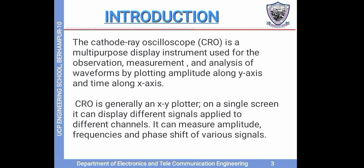Introduction. The cathode ray oscilloscope, i.e. CRO, is a multi-purpose display instrument used for the observation, measurement and analysis of waveforms by plotting amplitude along the y-axis and time along the x-axis. CRO is generally an x-y plotter. On a single screen, it can display different signals applied to different channels. It can measure amplitude, frequencies, and phase shift of various signals.